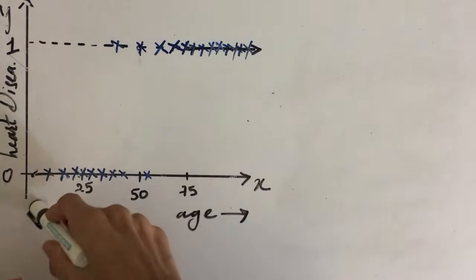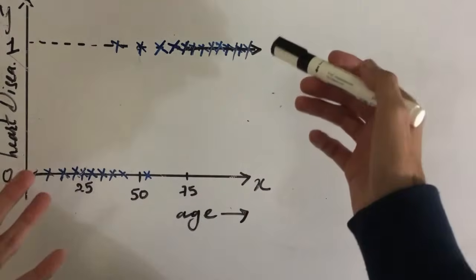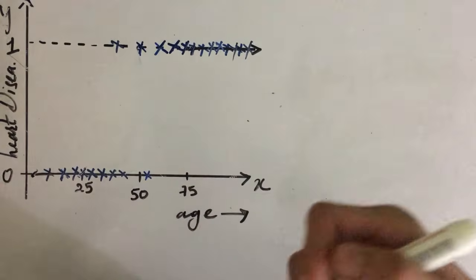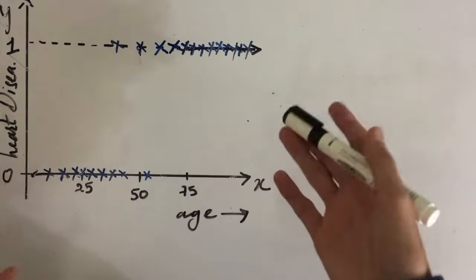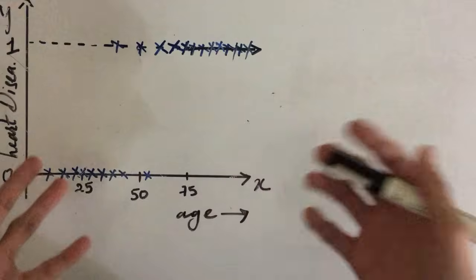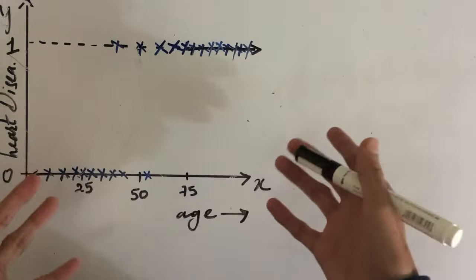One thing we can do is draw an approximate straight line that fits this dataset and we can consider that straight line as the probability if the person is having a heart disease or not. What do I mean by that? Let me show you.